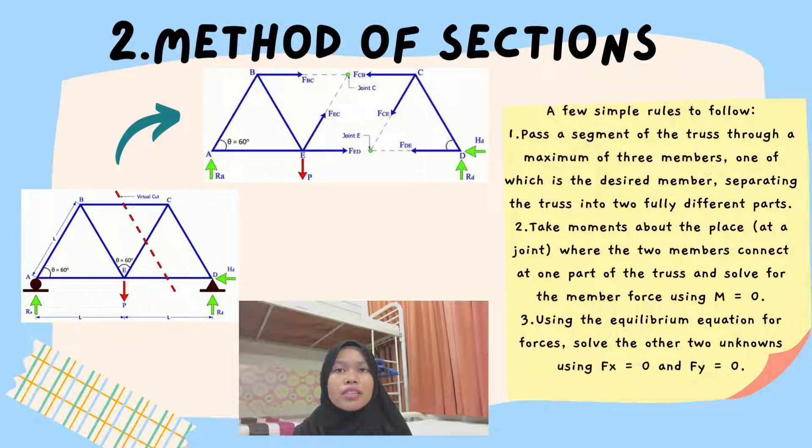Move to the second method of sections for truss analysis. When determining the force in all components of a truss, the section technique is an effective method. When only a few member forces of a truss are required, the method of sections is the shortest way to determine this. A section is drawn across the stable truss in this manner. As a result, a section divides the truss into two parts. Because the entire truss is in equilibrium, any part of it must be in equilibrium as well.